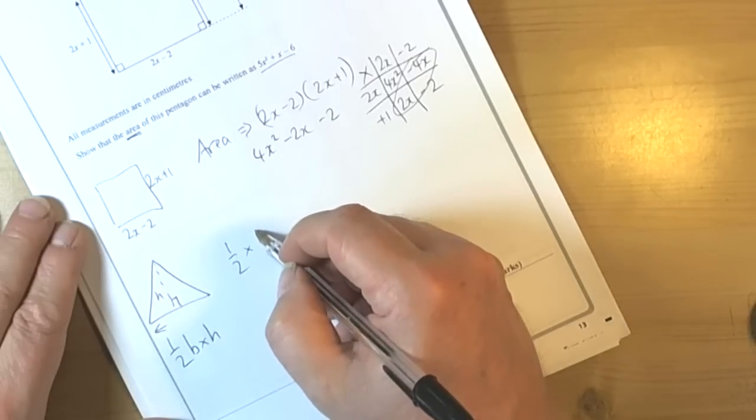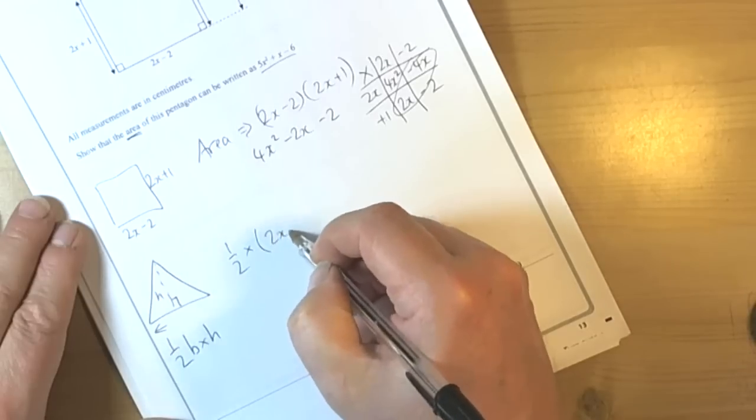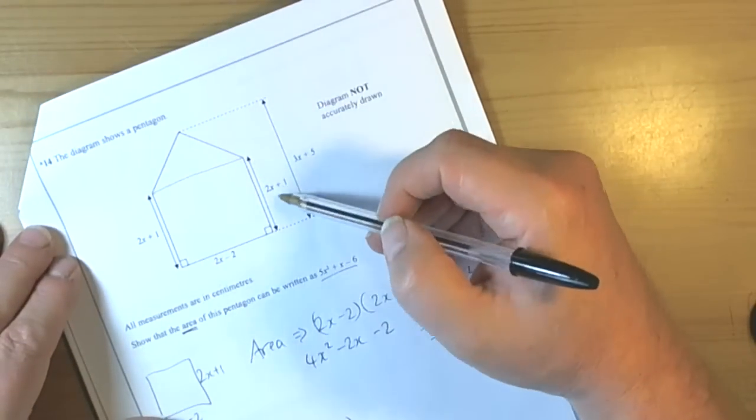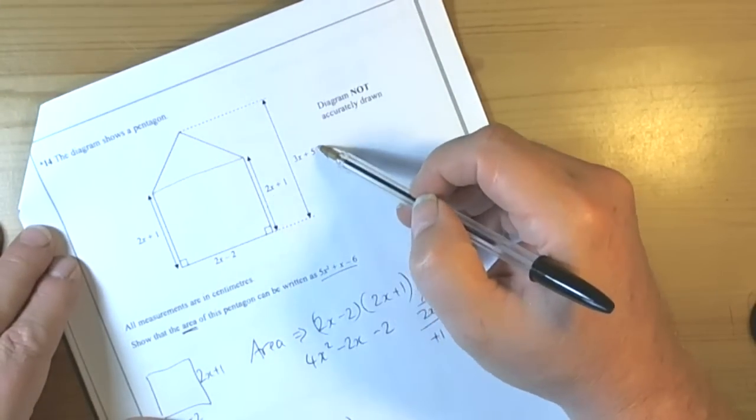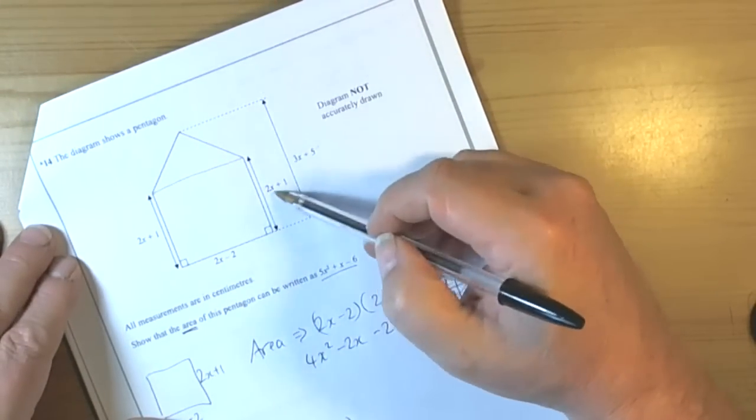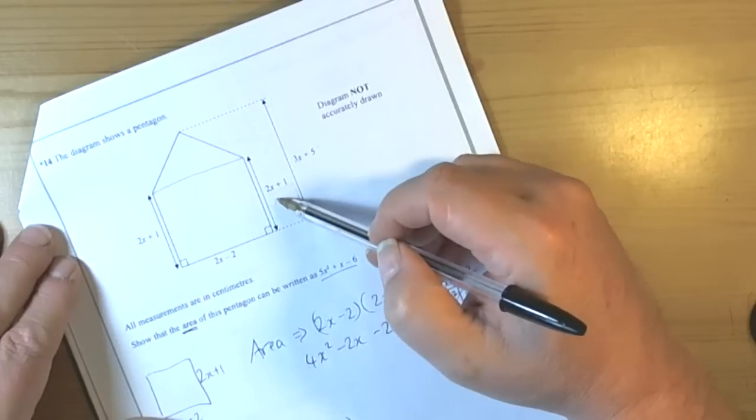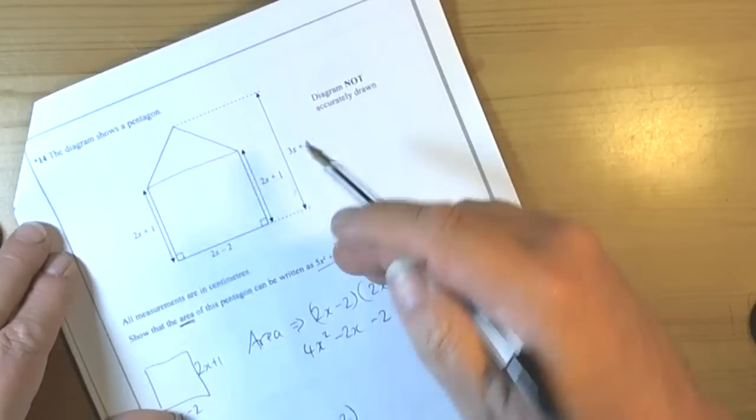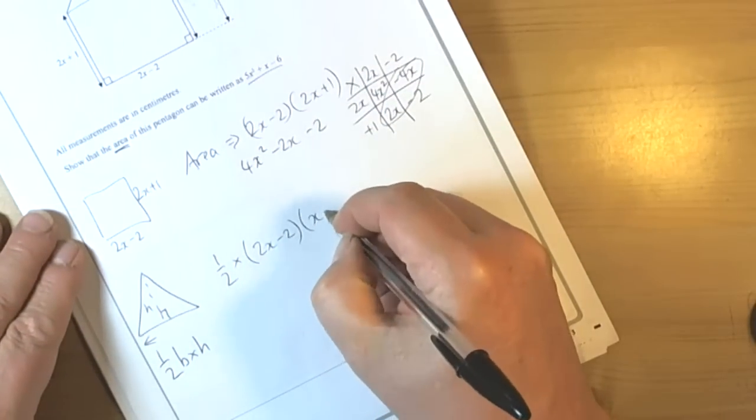So we're going to have to do a half times, ok so the width of the base length of the rectangle is 2x minus 2 and the height of the rectangle, well when we go back to the picture we can see that we had 3x plus 5 all the way up, 2x plus 1. So we look at the difference of those two and we can see that 3x take away 2x is x, 5 take away 1 is 4 so it's going to be x plus 4.